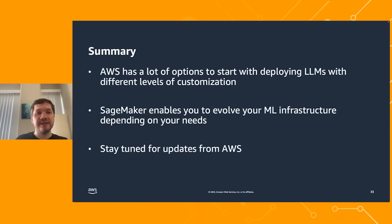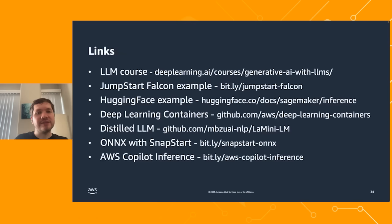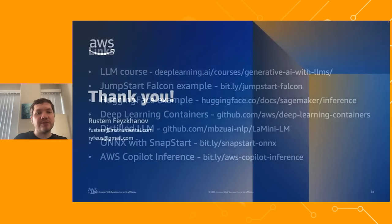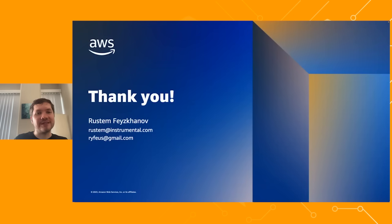To summarize, AWS has a lot of options to start deploying large language models in production with different levels of customization depending on your project. SageMaker enables you to evolve your machine learning infrastructure over time depending on your needs. Stay tuned for updates from AWS for other options for large language models. Here are links to different courses, blog posts, and GitHub projects mentioned throughout the slides. Thank you very much for your time — happy to answer your questions in the comments.